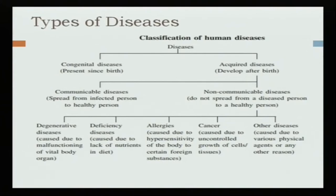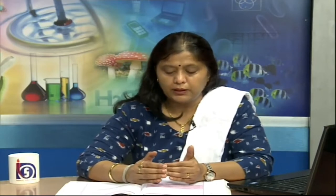We talk about allergies due to hypersensitivity of the body to certain foreign substances, and cancer, which is a kind of genetic disorder due to uncontrolled growth of cells and tissues. This is a body disorder when the body does not work in order — when the process of abnormality occurs — then we can say that this is a disease.